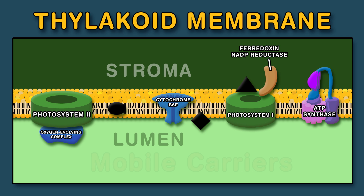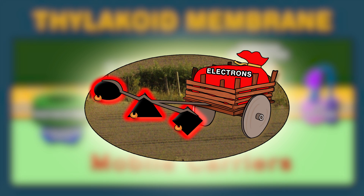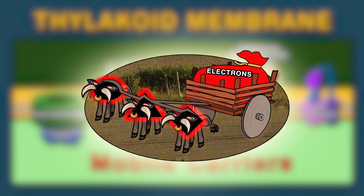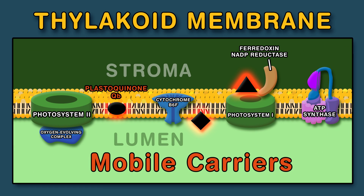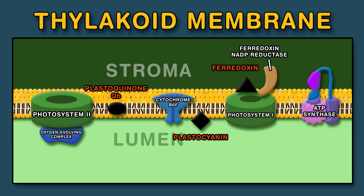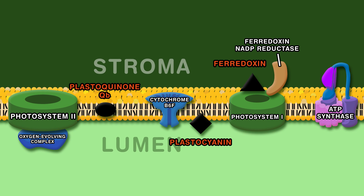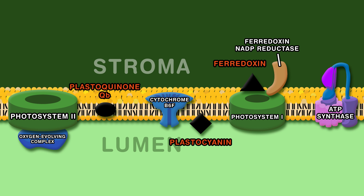The mobile electron carriers in the ETC are: Plastoquinone QB, Plastocyanin, and Ferredoxin. Now we've set the stage. The light-dependent reactions begin with Photosystem II. Photosystems I and II have chlorophyll molecules, which are useful tools for photoexcitation.